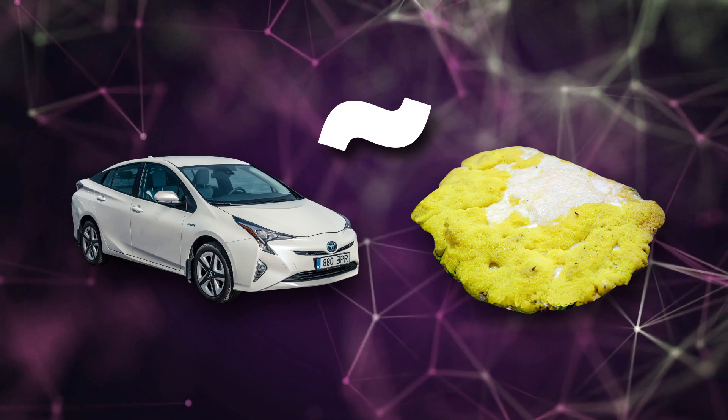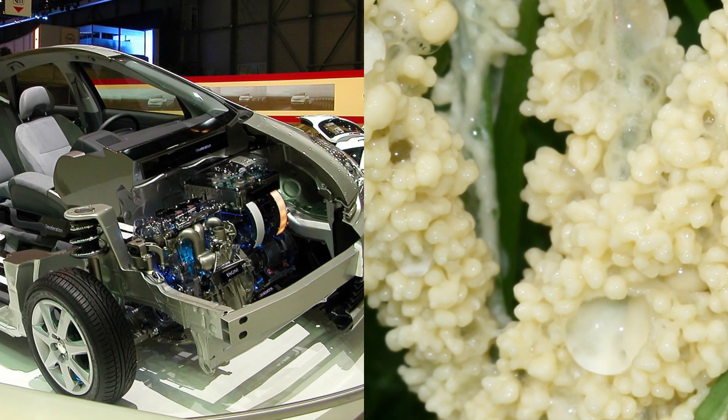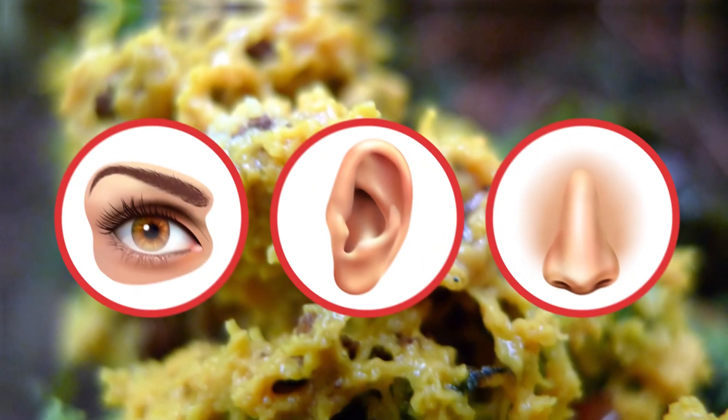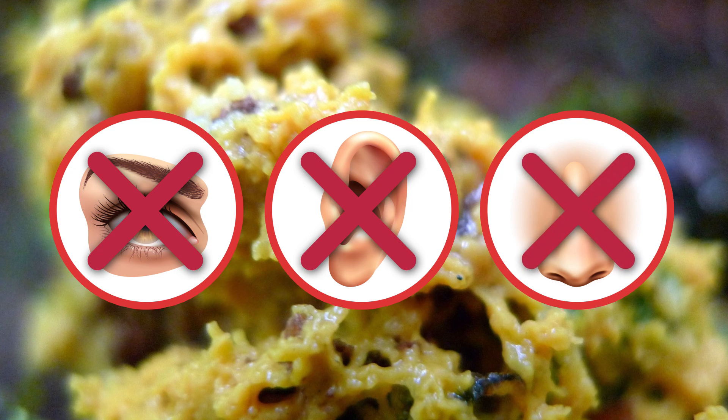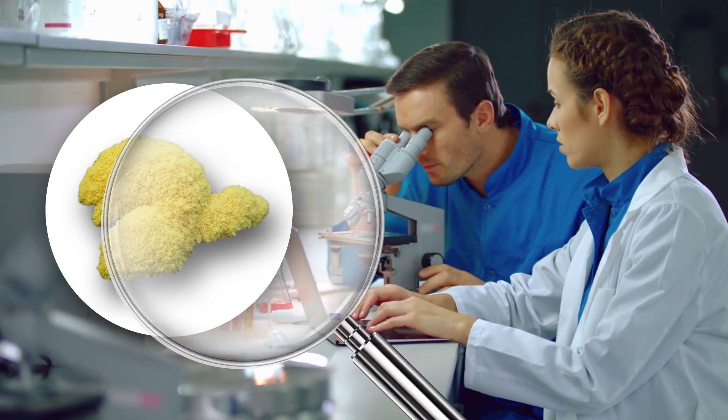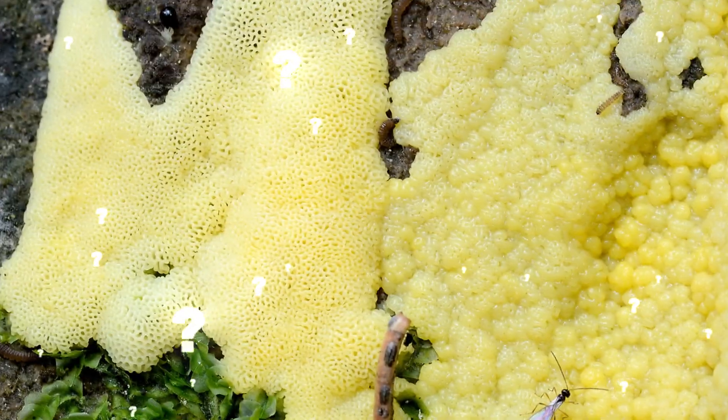Slime mold is a lot like a Toyota Prius, ugly, but with a lot of cool stuff under the hood. It doesn't have eyes, ears, or a nose, but this weird little life form has been a hot topic in science communities for a while now. So what's all the fuss about?